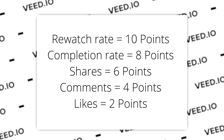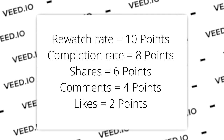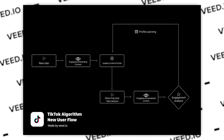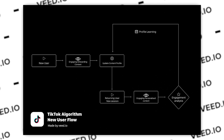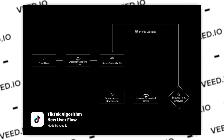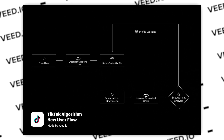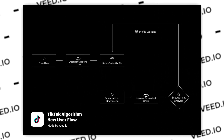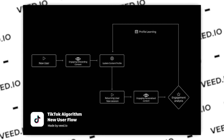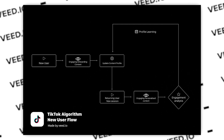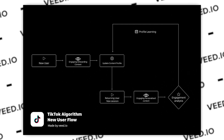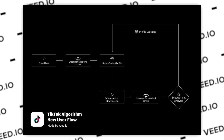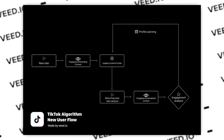The point system again: rewatch rate is 10 points, completion rate 8 points, shares 6 points, comments 4 points, likes 2 points. Here's the new user flow graphic: a new user goes onto TikTok for the first time, starts engaging with welcoming content, and TikTok updates that user's content profile. When the user returns, they're shown personalized content based on their previous session. TikTok analyzes all the content you've engaged with, learns more about you, and updates what you're shown. Over time TikTok gets more and more informed about what you like so it can better recommend content.